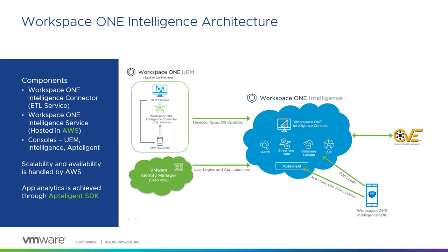Architecturally, let's look at what makes up Workspace ONE Intelligence. Workspace ONE Intelligence is a cloud-only service run by VMware, hosted on Amazon Web Services. It includes a few different components. First, that cloud service running on Amazon — it's going to aggregate all the data, generate and schedule reports for you, and populate dashboards with different views and data points that you choose to see.